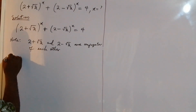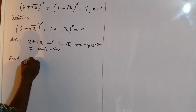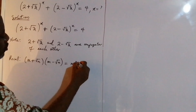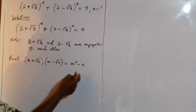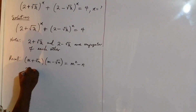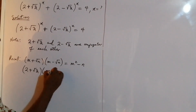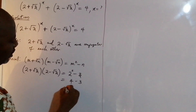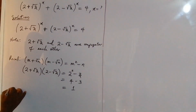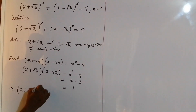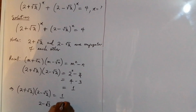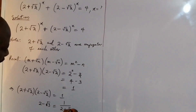Recall that (m + √n)(m − √n) = m² − n, where m stands in for 2 and n is 3. So that means (2 + √3)(2 − √3) = 2² − 3 = 4 − 3 = 1. So what that means is that (2 + √3)(2 − √3) = 1, which means that (2 − √3) = 1 / (2 + √3). We are going to be using this in the original equation.